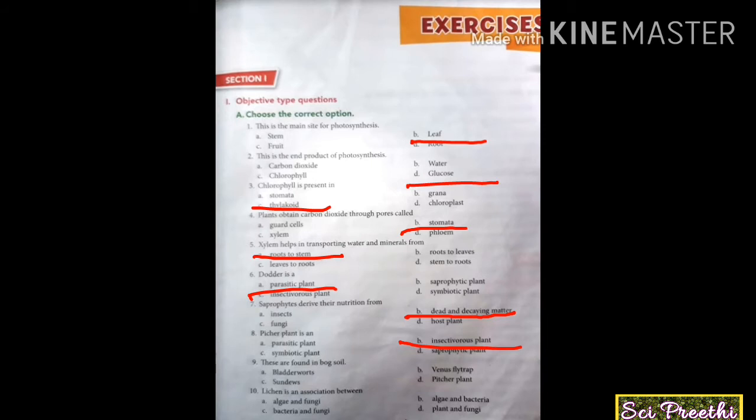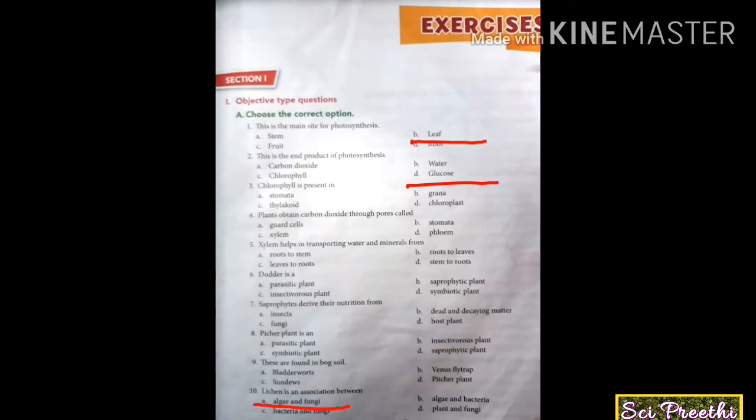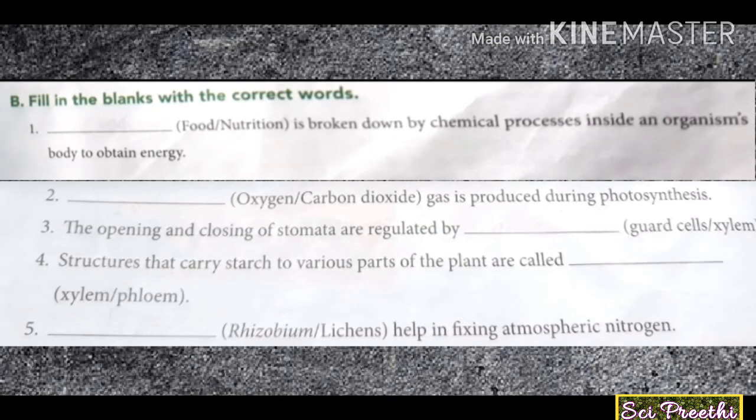Ninth question: these are found in bog soil — bog is an area of muddy ground too soft to support a heavy body. Option B, Venus flytrap, is found in bog soil. Last question: lichen is an association between algae and fungi.